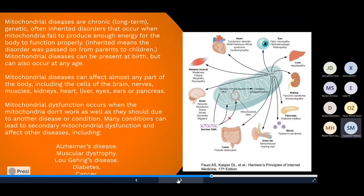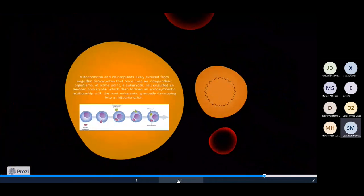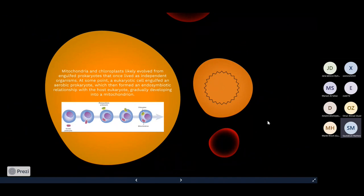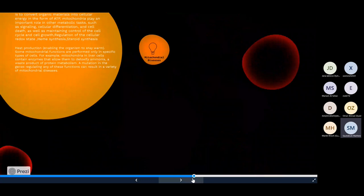Mitochondria also have their own DNA and their own ribosomes. The DNA in the cell nucleus does not code for the construction of the mitochondria — all the mitochondria in your body come from the mother, as they give genes and cytoplasm to their children through egg cells. The primary function of mitochondria is to convert organic molecules into cellular energy via the electron transport chain (ETC), which also plays an important role in signaling, cellular differentiation, cell death, and maintaining control of the cell cycle and cell growth, as well as heme synthesis and steroid synthesis. Heat production enables the organism to stay warm, and mutations in genes regulating any of these functions can result in a variety of mitochondrial diseases, affecting almost any part of the body including the brain, nerves, muscles, kidneys, ears, or pancreas — including Alzheimer's or muscular dystrophy. In conclusion, mitochondria and chloroplasts likely evolved from engulfed prokaryotes that once lived as independent organisms through an endosymbiotic relationship.